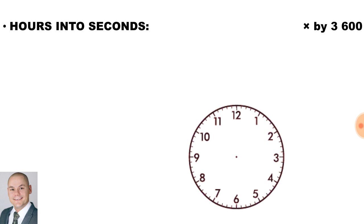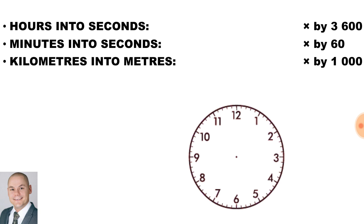Now, to convert hours into seconds, we would multiply by 3600. To convert minutes into seconds, we would multiply by 60. To convert kilometers into meters, we multiply by 1000.